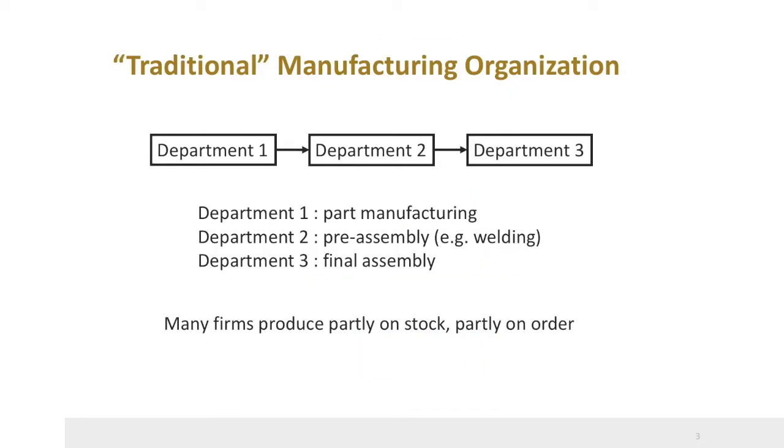Let us consider a manufacturing situation with three departments: part manufacturing, pre-assembly, and final assembly. Many manufacturing companies have these departments. These companies may produce final products partly on stock and partly on order.